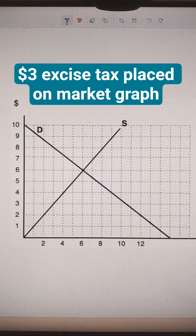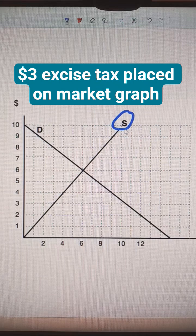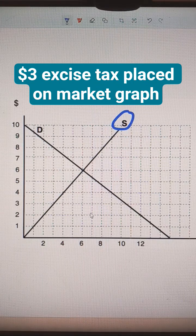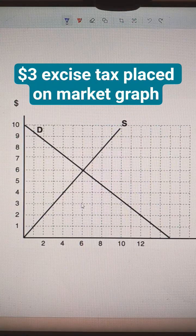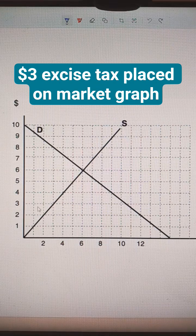If we're going to put an excise tax of $3 on this market, you can either put it on the sellers, in which case it would shift up the supply curve by $3, or you could put the tax on the buyers, which would shift the demand curve downwards by $3. Either way, it's more common to put the tax on the sellers.